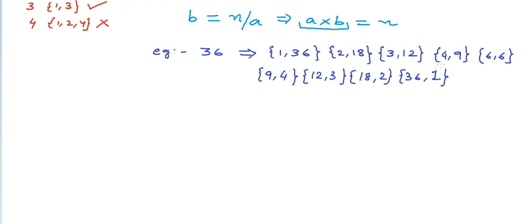If you carefully see, we can see a pattern here that the pairs are repeating. Only the order is different but the numbers are the same. So we have 9, 4 and 4, 9. 12, 3 and 3, 12. 18, 2 and 2, 18. 36, 1 and 1, 36. So we are getting the same pairs again.